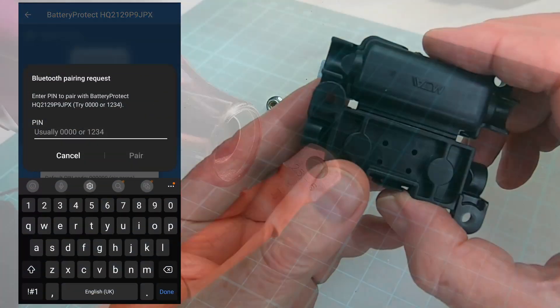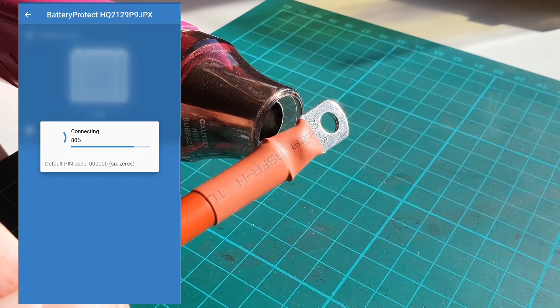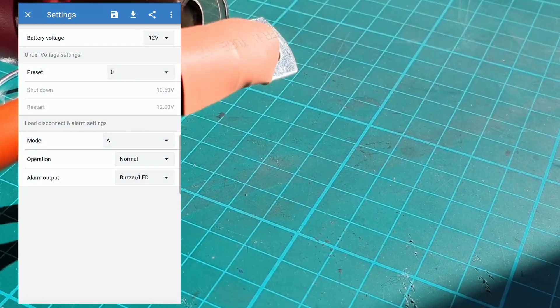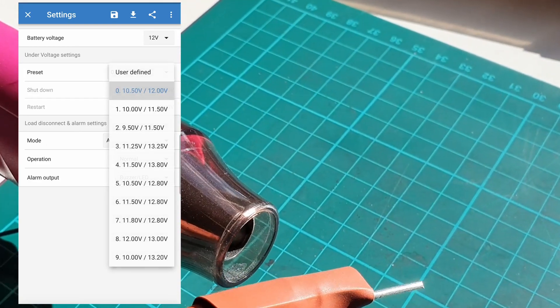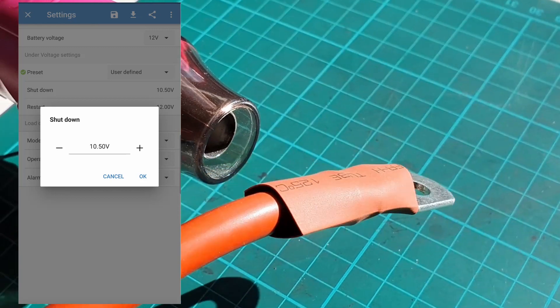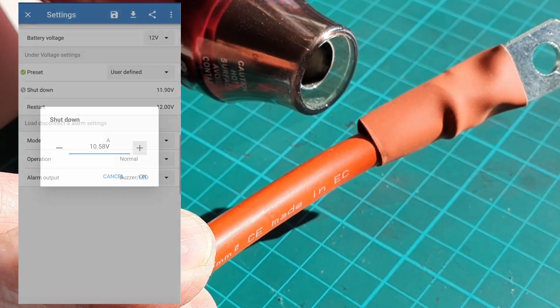I set the under voltage shutdown to 12.25 volts to compensate for having the battery under load. Because the only reason for the battery voltage to increase would be because solar charging was kicking in, I set the under voltage restart to 12.6 volts.